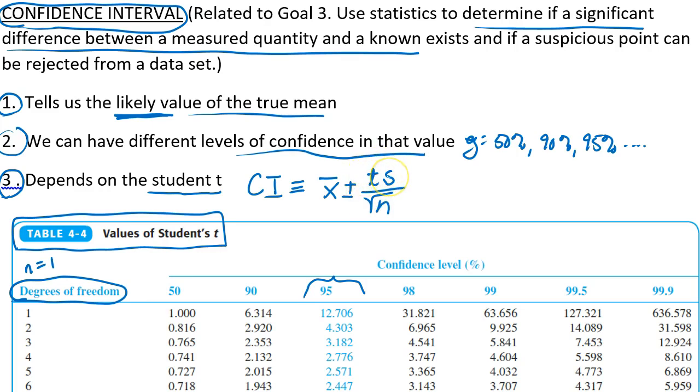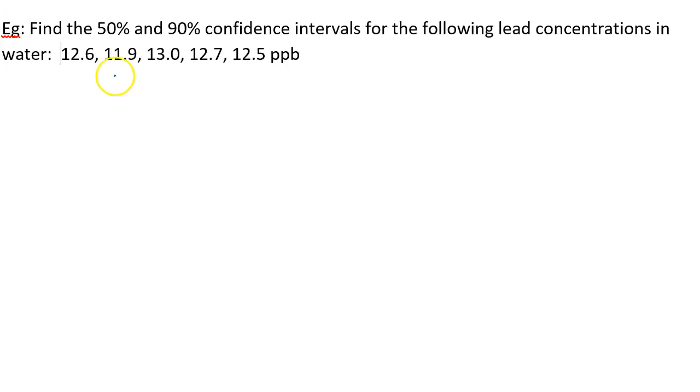So let's see if we can do an example. Let's see if we can find the 50% and the 90% confidence intervals for these lead concentrations, and they have the units of parts per billion. Any time I'm asked to calculate a confidence interval, the first thing I do is count how many data points I have: that's 5, and that means that the degrees of freedom are 4. I like to do that just to make sure that I use the correct value for T.